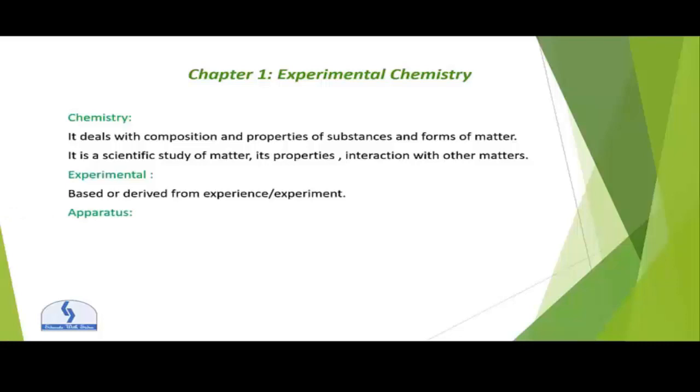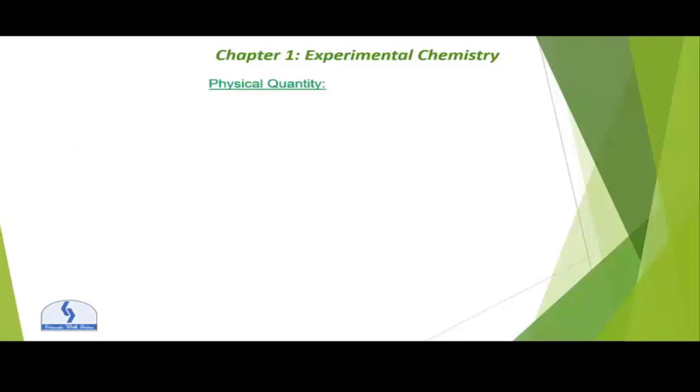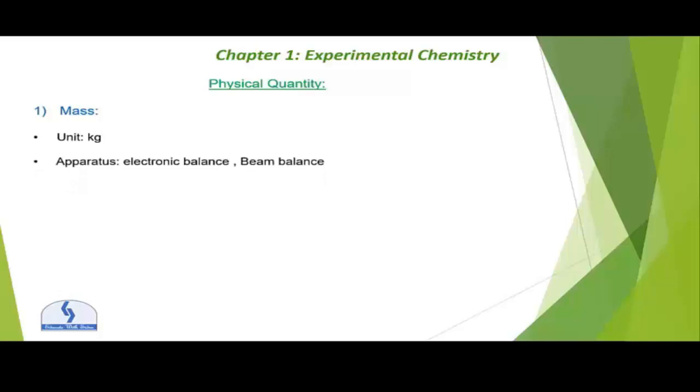Apparatus refers to the equipment or machinery needed for a particular activity or purpose. Now, physical quantities — we have four physical quantities. The first one is mass. Mass is the amount of matter present in a substance. Its SI unit is kilogram; other units are gram, milligram, etc. The apparatus used for measuring mass is the electronic balance and beam balance.